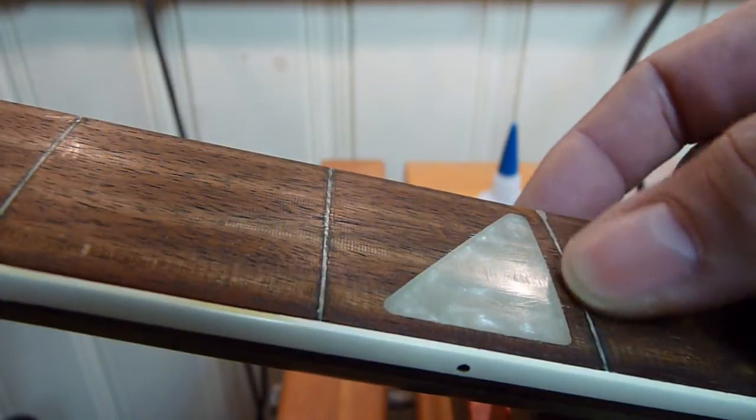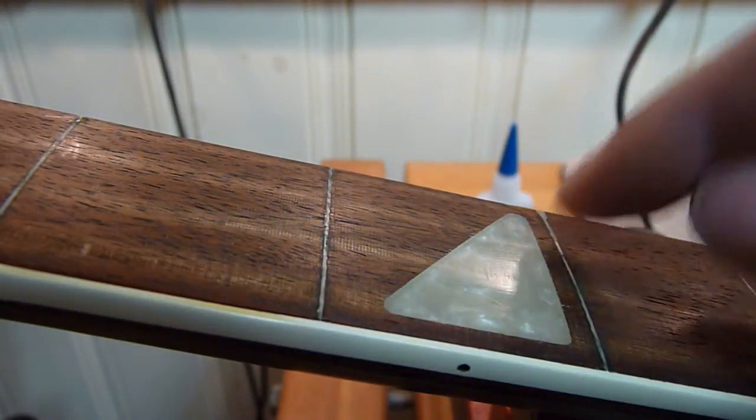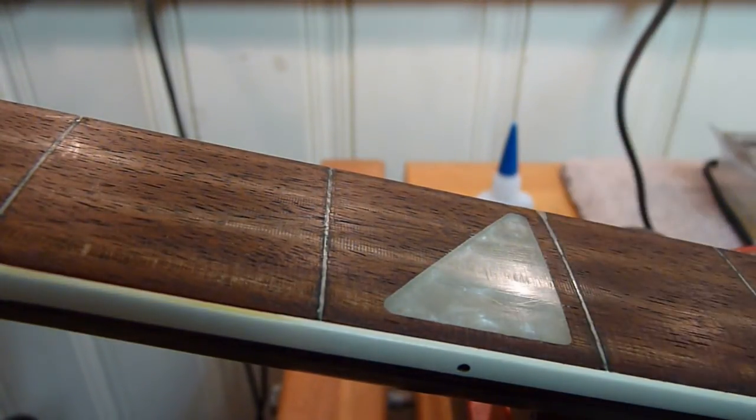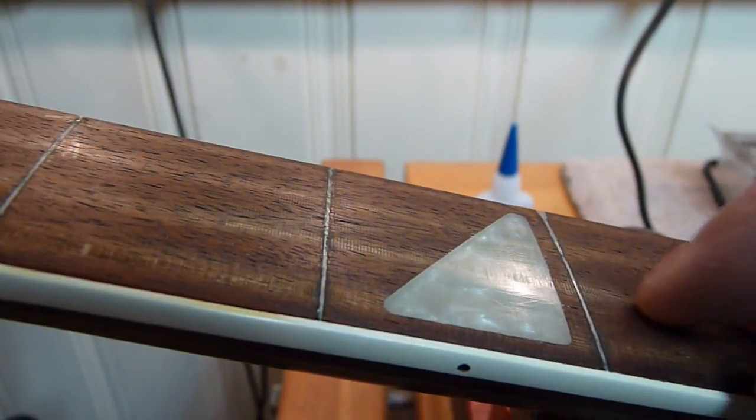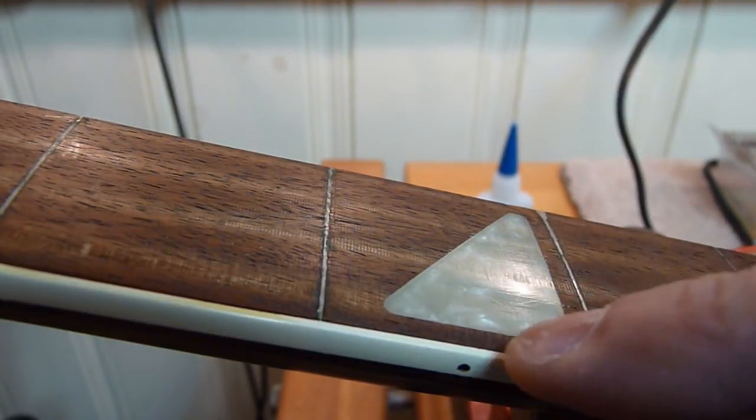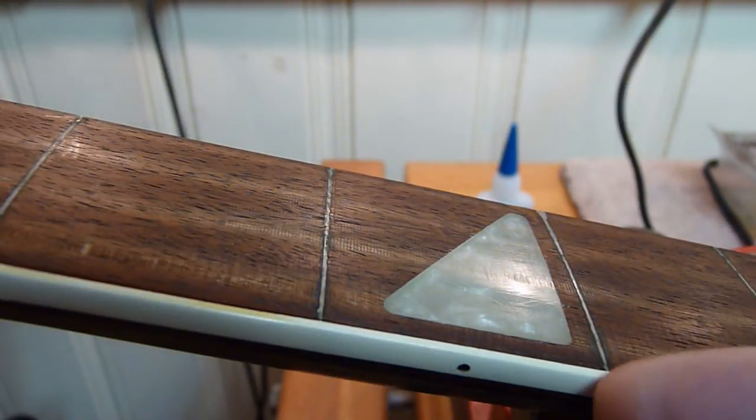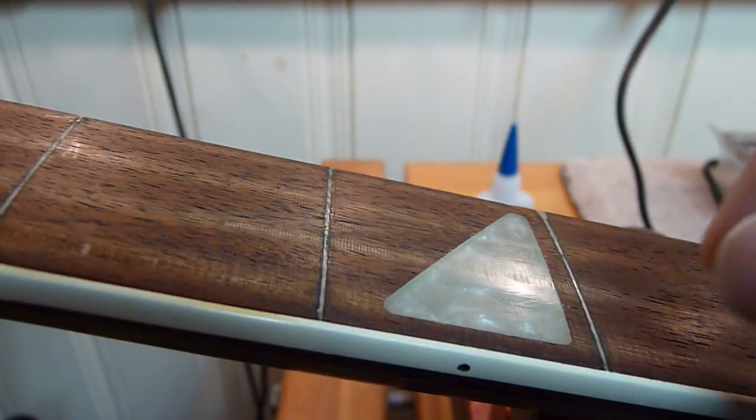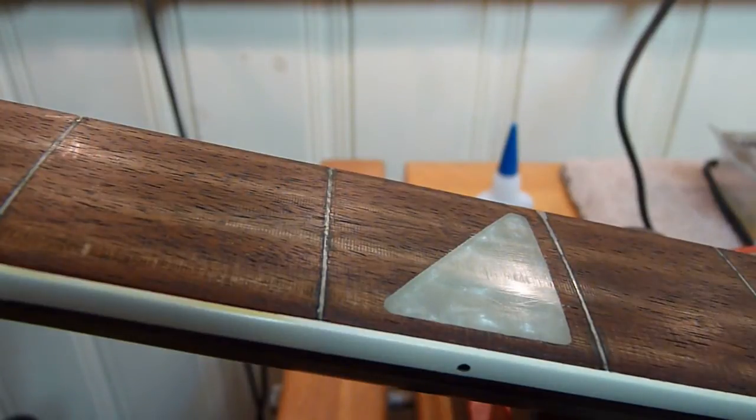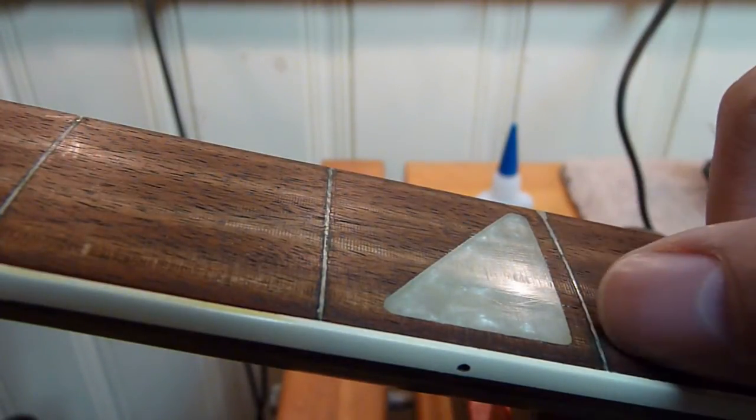And it's going to be kind of difficult to get this out. After thinking about it, I think that the only way I can really get this out is to remove the binding. That way I'll be able to get at the tang from underneath and force it up, pry it out.